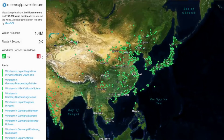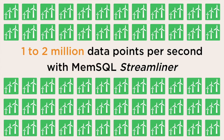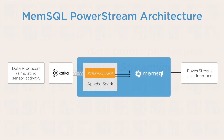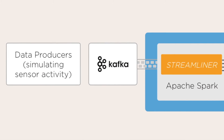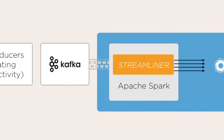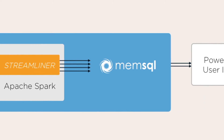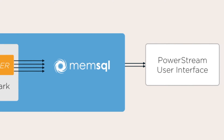Data producers generate sensor activity, pushing about a million data points per second into an Apache Kafka topic. The topic is consumed by a MemSQL Streamliner data pipeline, which uses a machine learning algorithm to predict the health of each turbine prior to streaming data into MemSQL. The application serves from the same MemSQL database while the pipeline is ingesting sensor data.